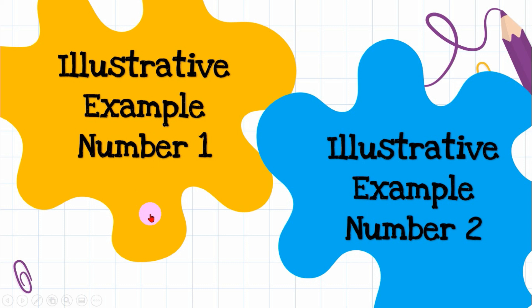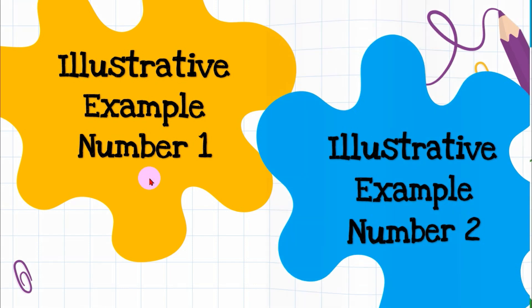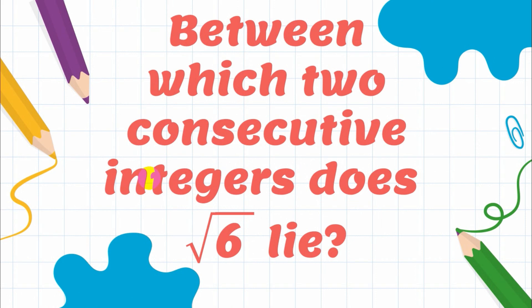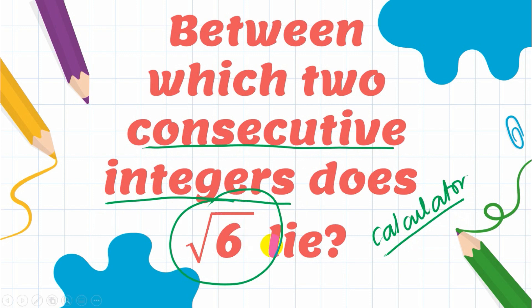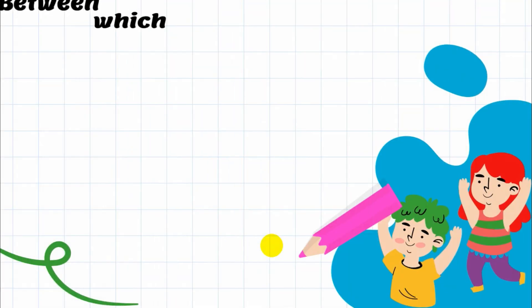Now let's analyze this topic with two illustrative examples. Illustrative Example Number 1: Between which two consecutive integers does the square root of 6 lie? In other words, where can we find the square root of 6? Using a calculator would be very easy, but our goal is not just to find the principal root — we need to find the two consecutive integers that the square root of 6 lies between.